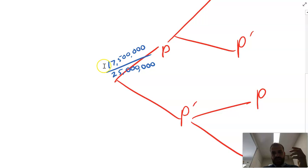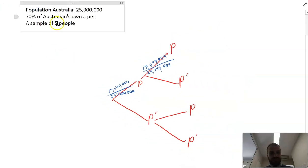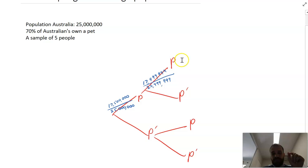So our probability if we write it as a fully expanded fraction is 17.5 million over 25 million. Now the problem comes with our next step here because if we're doing this without replacement then the probability of the next person having a pet would be 17,499,999 out of 24,999,999. And you can imagine that if I'm doing this for a sample of five and I have to draw five fractions that are all like that and I need to do them for all the branches, that is going to get really, really complicated.